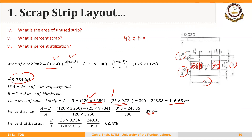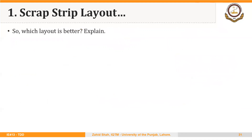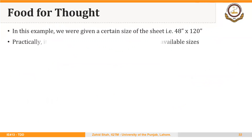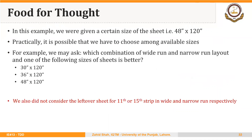The scrap is more in this case compared to the wide run layout, and utilization is less compared to the wide run layout. So the wide run layout proves to be better in this case. These calculations — area of unused strip, percent scrap, and percent utilization — were made for each of the strips. It is possible that we have to choose among available sheet sizes, and we could make similar calculations to see which size proves to be better with respect to percent scrap and percent utilization. Thank you very much.